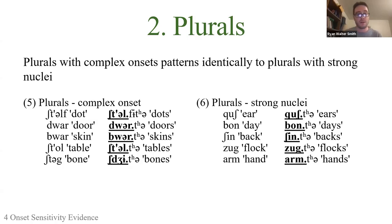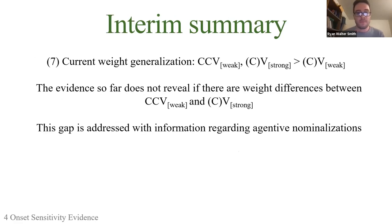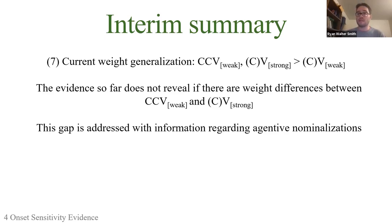Plurals with complex onsets pattern with plurals of nouns with strong vowels in their nucleus. Words like dwar 'door' pluralize to dwarta with first-syllable stress. This creates a comparison: plurals with strong vowels always bear initial stress, and plurals with complex onsets plus weak vowels also bear initial stress, establishing that CCV-weak syllables are heavier than CV-weak syllables — but leaving open how CCV-weak compares to CV-strong.